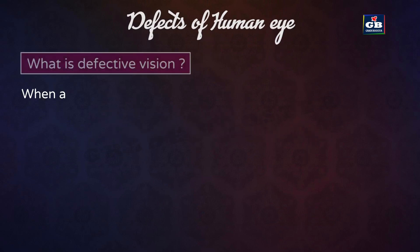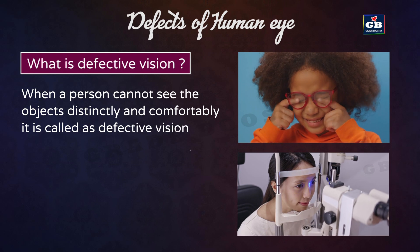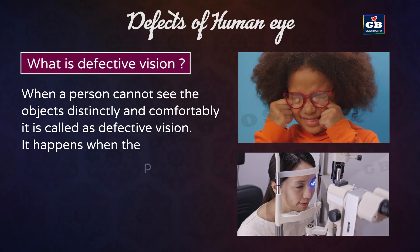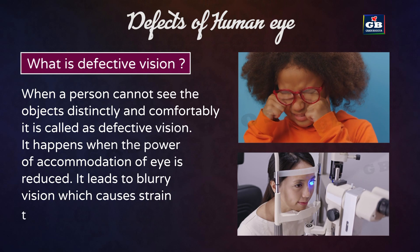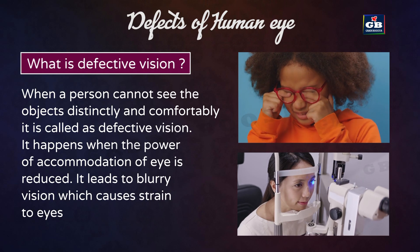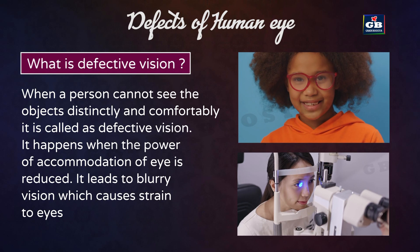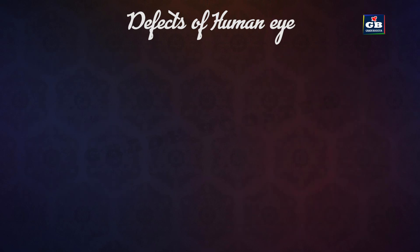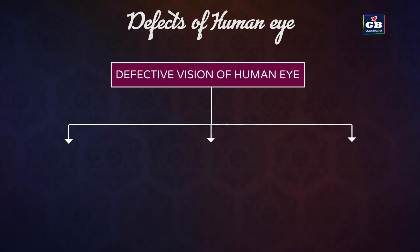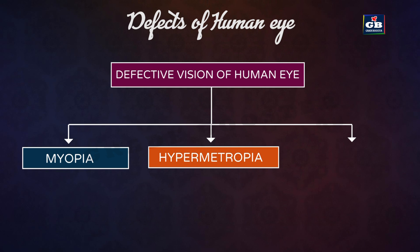Defects of the human eye: what is defective vision? When a person cannot see objects distinctly and comfortably, it is called defective vision. It happens when the power of accommodation of the eye is reduced, leading to blurry vision which causes strain to the eyes. The defective vision of the human eye is mainly of three types: myopia, hypermetropia, and presbyopia.